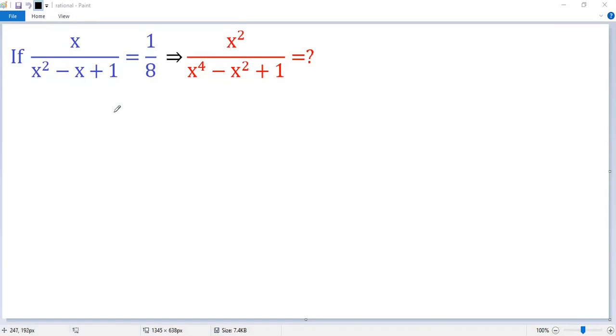We look at the reciprocal of the given condition. So, x squared minus x plus 1 over x, the right side is 8 over 1, which is 8.